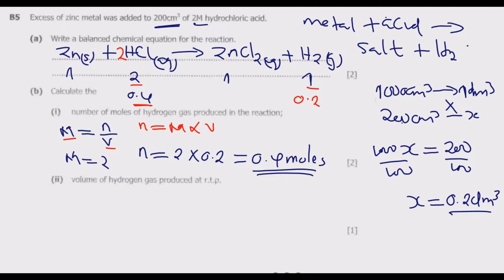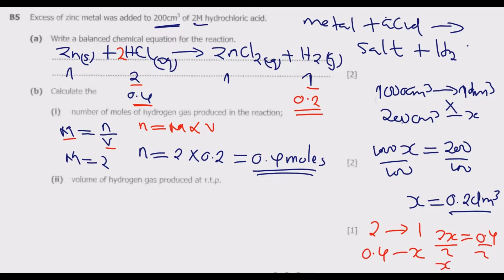Using the ratio: 2 is to 1 as 0.4 is to X. Cross-multiplying gives 2X = 0.4, so dividing by 2 gives X = 0.2. The answer is 0.2 moles of hydrogen gas produced.